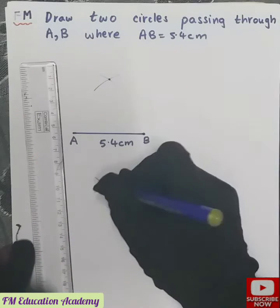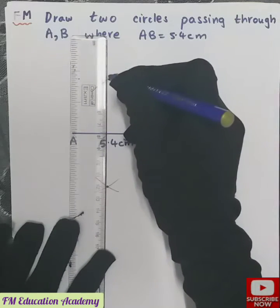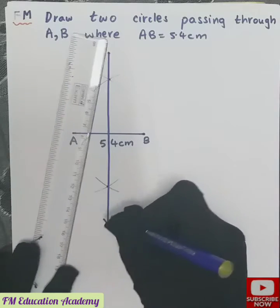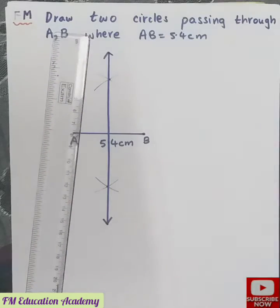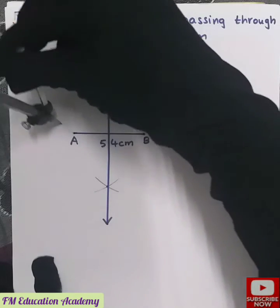Now join both these points. Now keeping the compass on this point and radius at A, draw a circle.